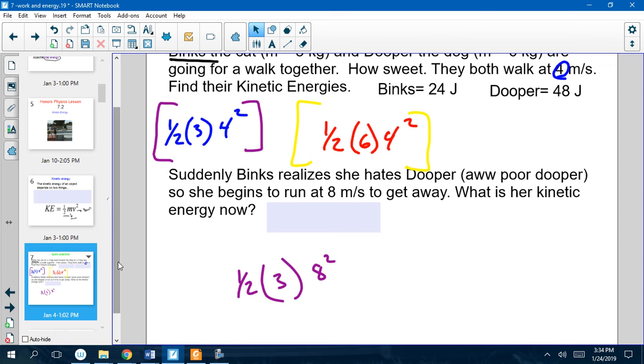Dooper, Dooper, Dooper, Dooper. But then, suddenly, Binks realizes she hates Dooper. Aw, poor Dooper. So, she begins to run at eight meters per second. What is her new kinetic energy?